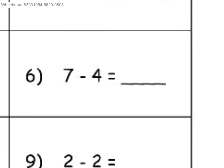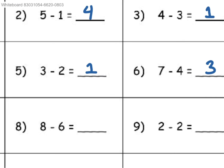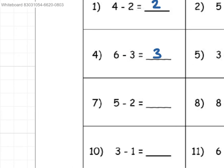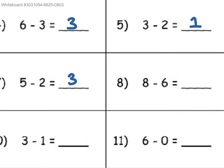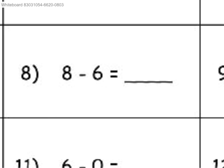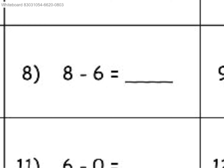7, take away 4, which would be 3. And then 5, take away 2, would be 3. 8, take away 6, would be 2.